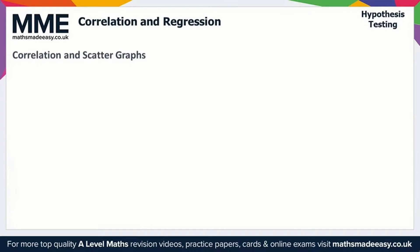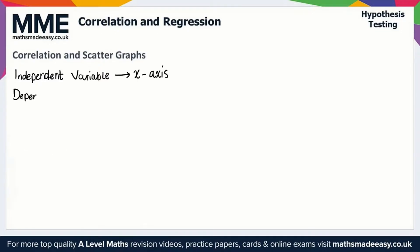When we have bivariate data, one variable will be the independent variable and another will be the dependent variable. The independent variable is the one that you can control — this goes on the x-axis. The dependent variable is the one that is being affected — this goes on the y-axis.